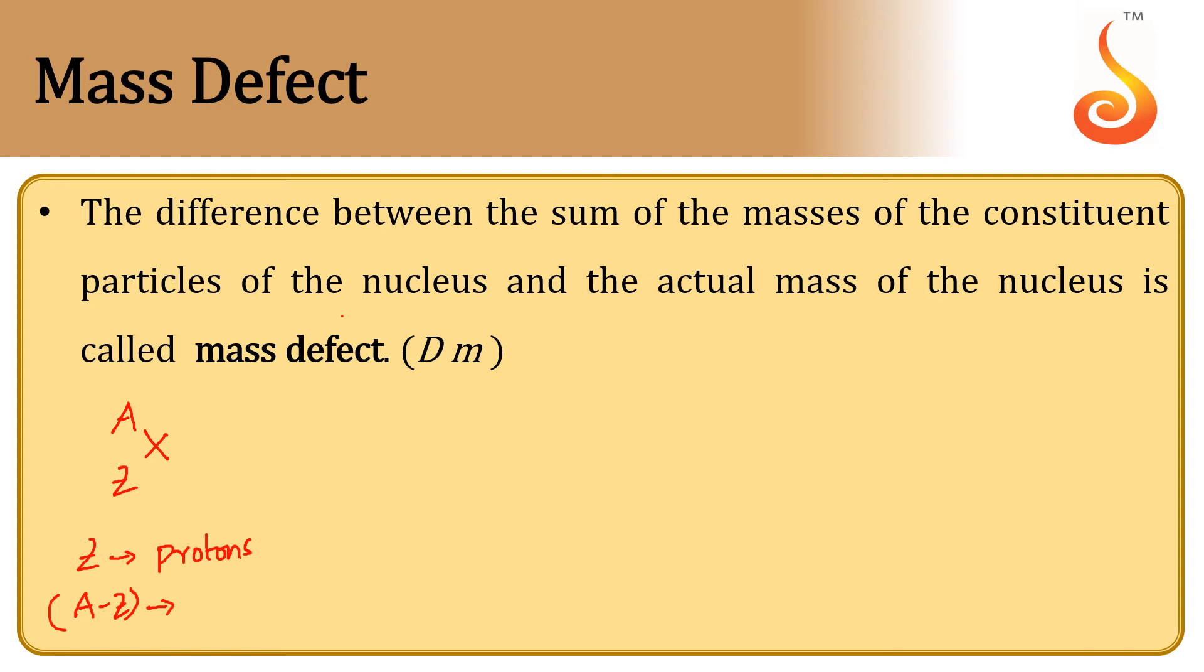A is the mass number representing the total number of nucleons, so A minus Z gives us the number of neutrons. How do we calculate mass defect? The difference of mass is the total mass due to protons, so total number of protons into mass of each proton, plus total mass of neutrons which is A minus Z into mass of neutrons.